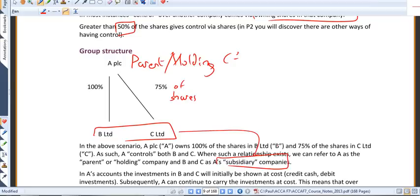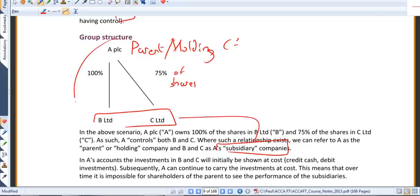What we do in group accounts is we pretend that all of these companies are one big happy family. We effectively add together the income statements or the statements of financial position of these businesses as if they were a single entity.